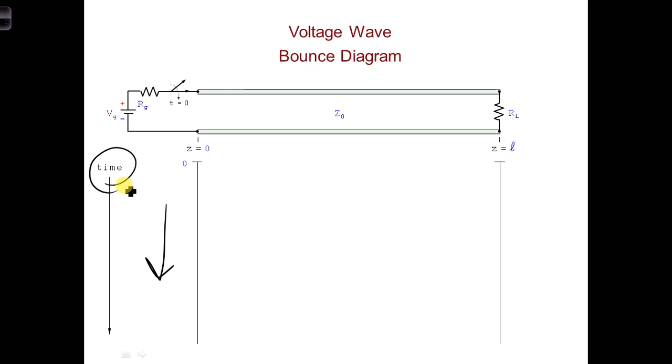When we do this, we get what is called a bounce diagram. Time t equals 0 is right here. As time evolves, we move down this vertical axis. Z equals 0 is still on the left at the generator, and Z equals L is on the right at the load.